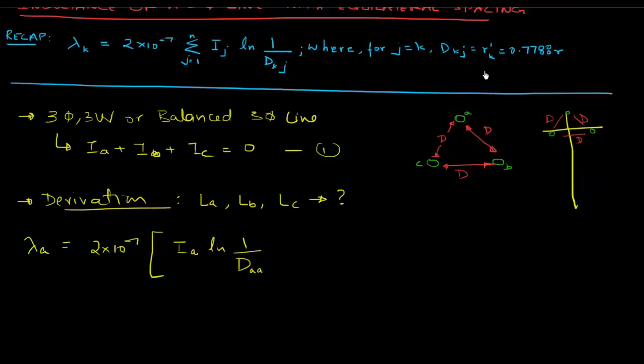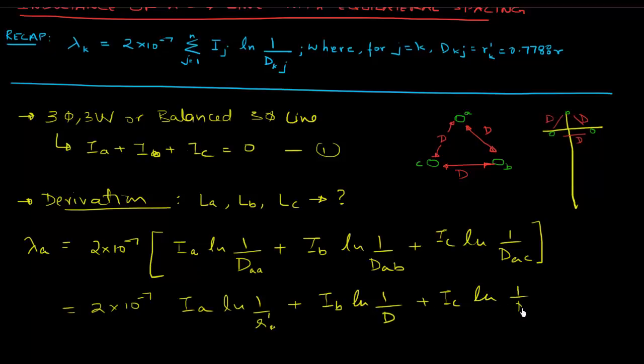And then you have Ib ln of 1 over d, the distance from a to b. And then you have Ic ln of distance from a to c. This is equal to 2 into 10 to the power minus 7, Ia ln of 1 over r prime plus Ib ln of 1 over d plus Ic ln of 1 over d, because the distance from a to b and a to c conductors is just d.